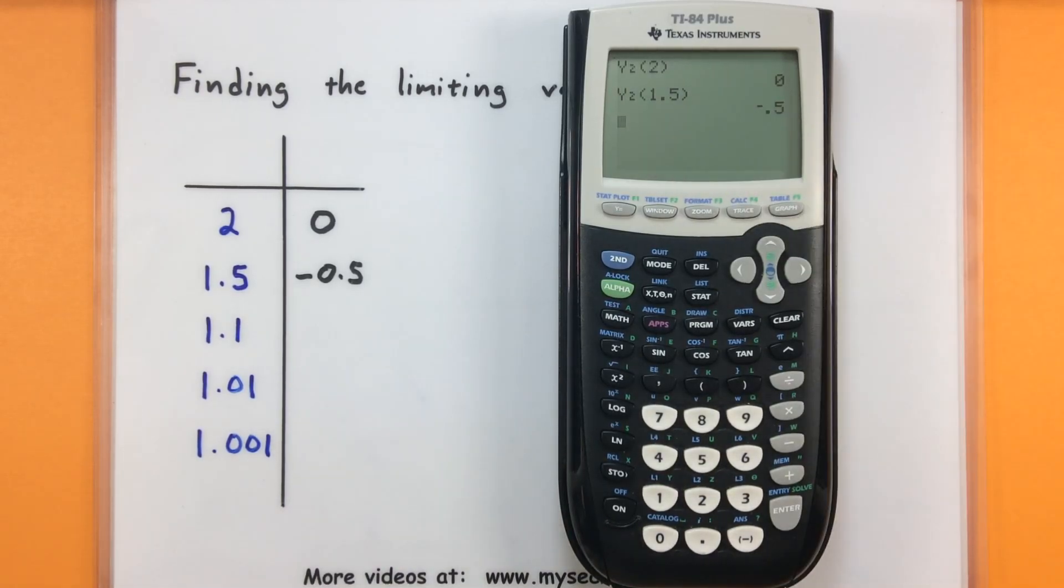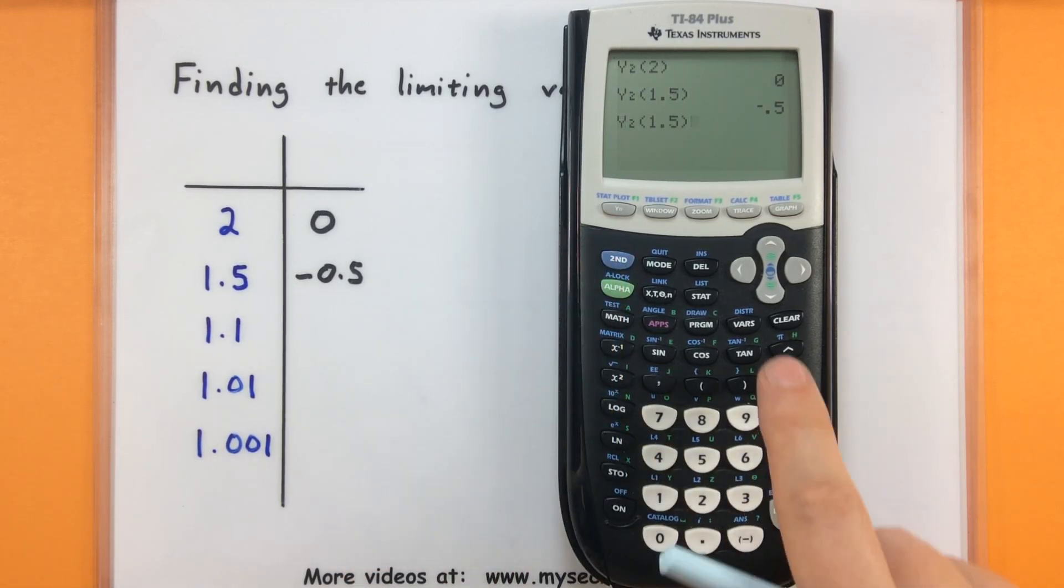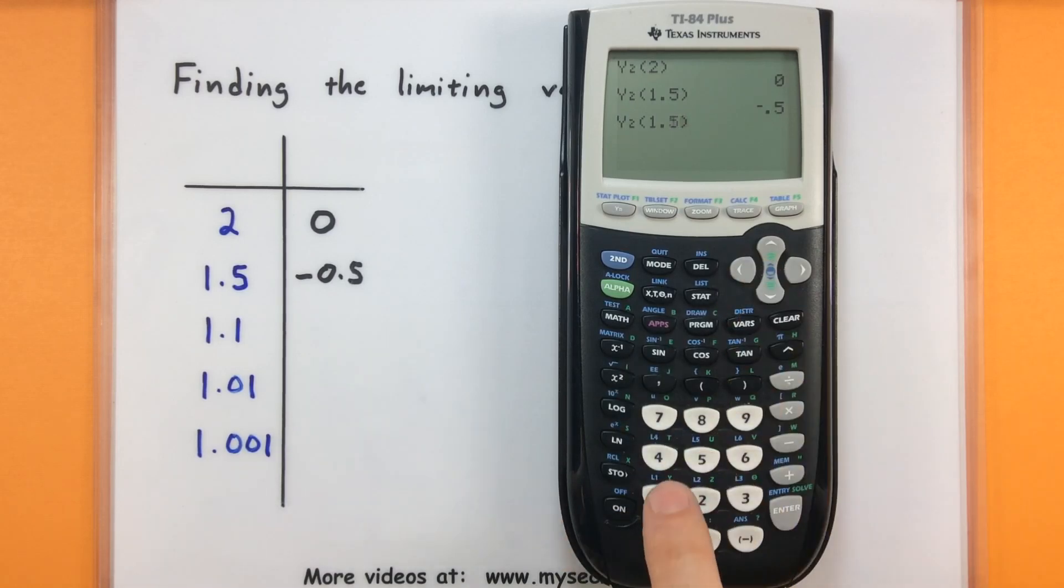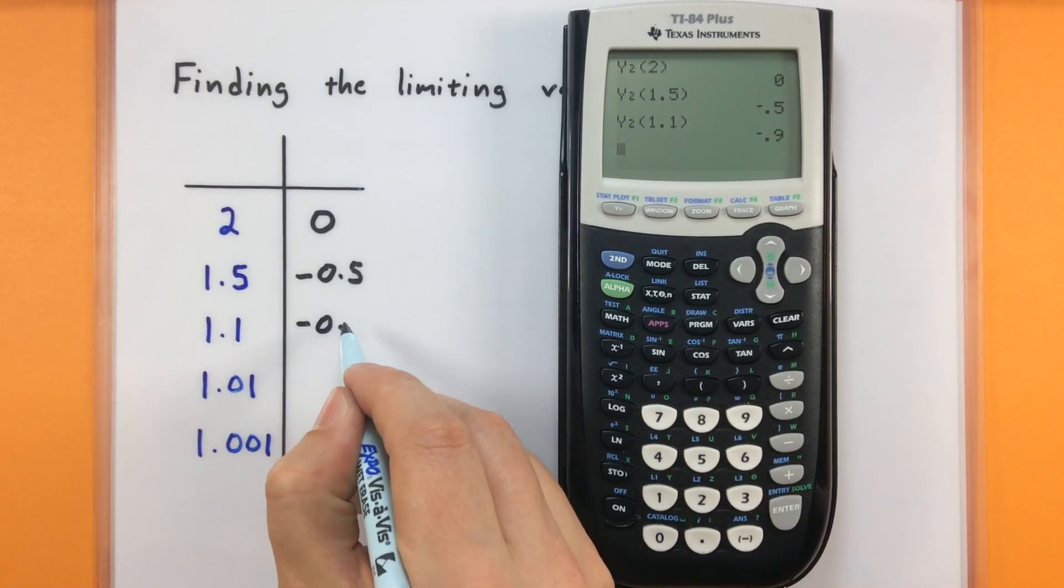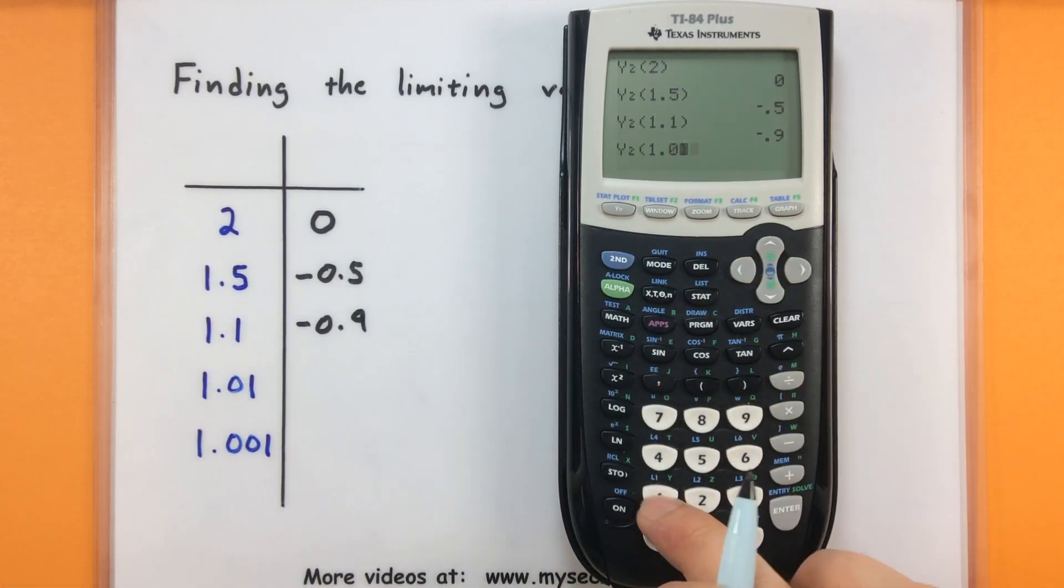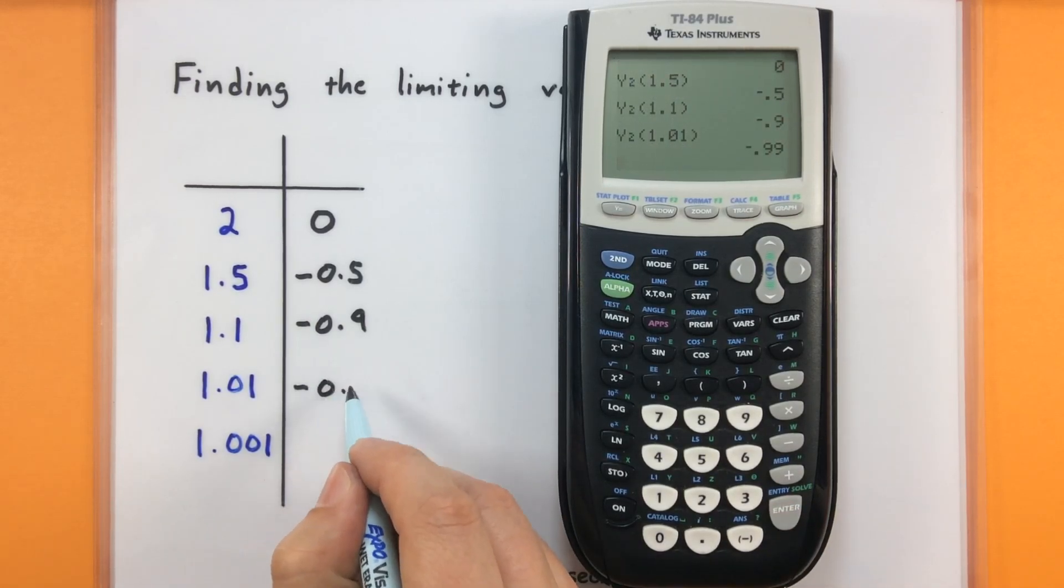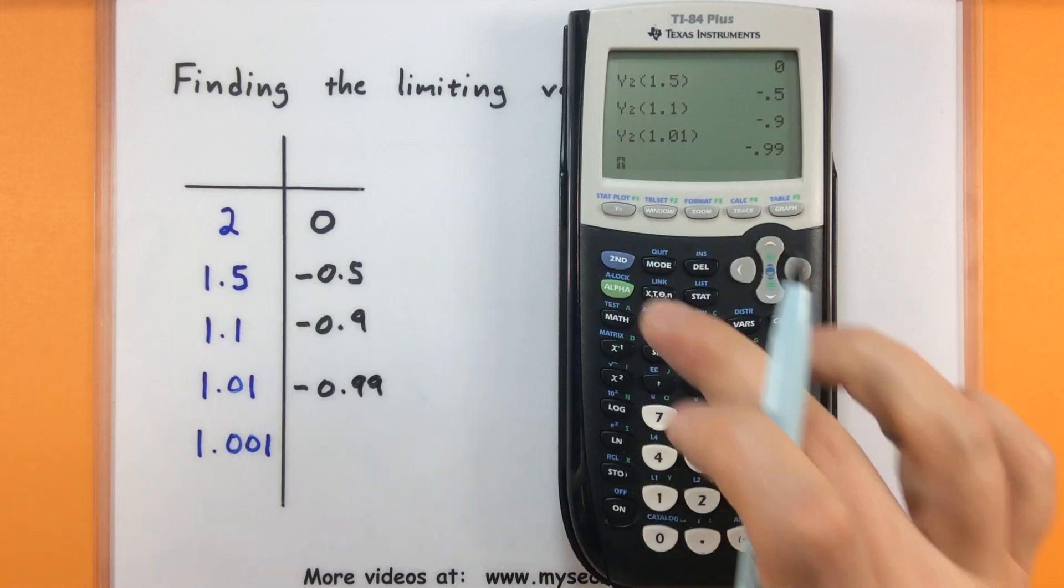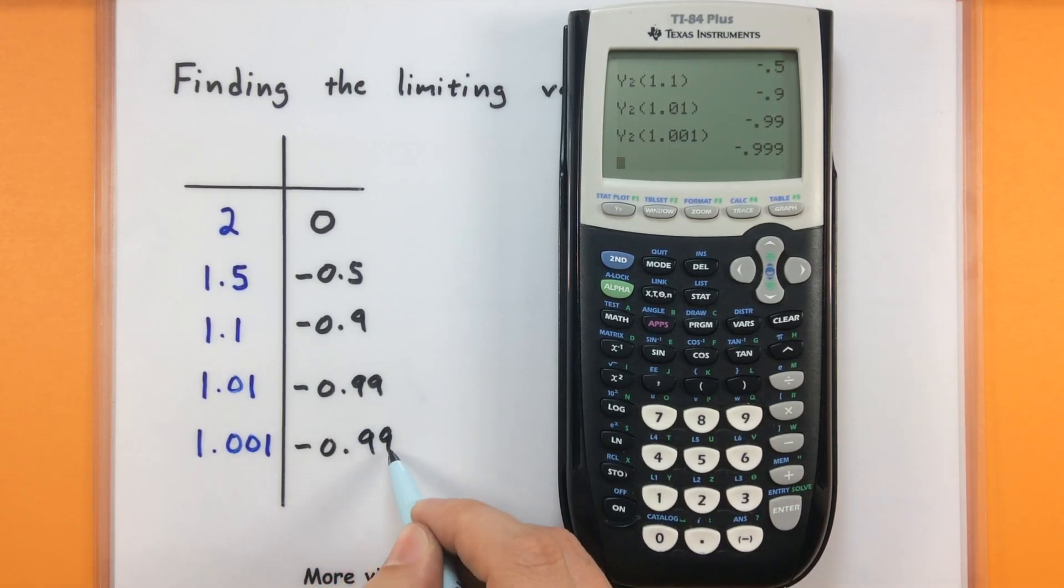Now the neat part is, if it's already on the screen like this, I can shortcut the process. I can go second, enter. And then we can change this so that I don't have to go through that variables menu. Make it a little bit quicker. This one's at negative 0.9. Second, enter. 1.01. Negative 0.99. And one last time, 1.001. Close parentheses. Negative 0.999.